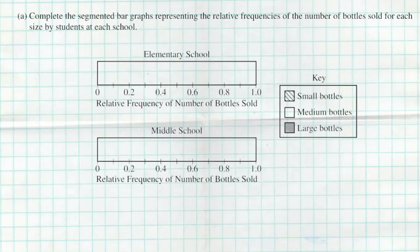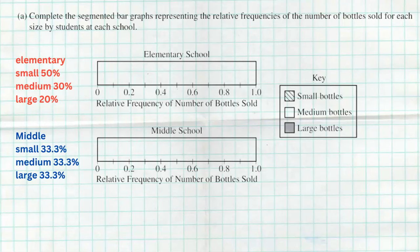All right, so the first question is actually really simple. They just want us to complete a segmented bar graph representing the relative frequencies of the number of bottles sold for each of the students at each school, elementary and middle school. So first we got to remember those proportions. At the elementary school we were told small 50%, medium 30%, and large 20%. And at the middle school we were told that they were all the same, which would be a 33.333 repeating split between all of them. So now we just got to kind of fill that in.